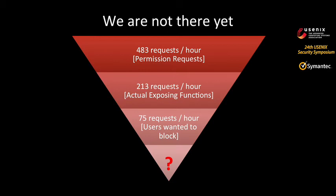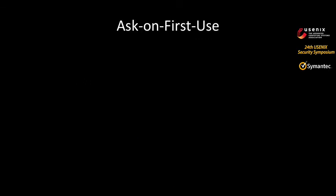We started with all permission requests, filtered down to the functions that only expose data, and further filtered to the contexts where users might find these requests unexpected — but the rate is still high. We can't practically prompt the user every single time, even under contexts they might deem unexpected. To tackle this, the industry is moving toward the policy of ask-on-first-use, where when an application requests one of these sensitive permissions for the first time, the platform prompts the user.